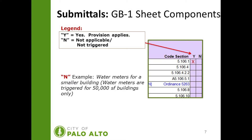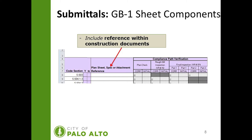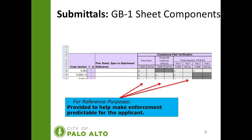This slide outlines the legend for the GB1 sheet components. Items listed as 'Y' are identified as yes, the provision applies, and 'N' means not applicable or not triggered. We ask that you include a reference within the construction documents. These are provided for your reference only to help make enforcement predictable for you as the applicant.